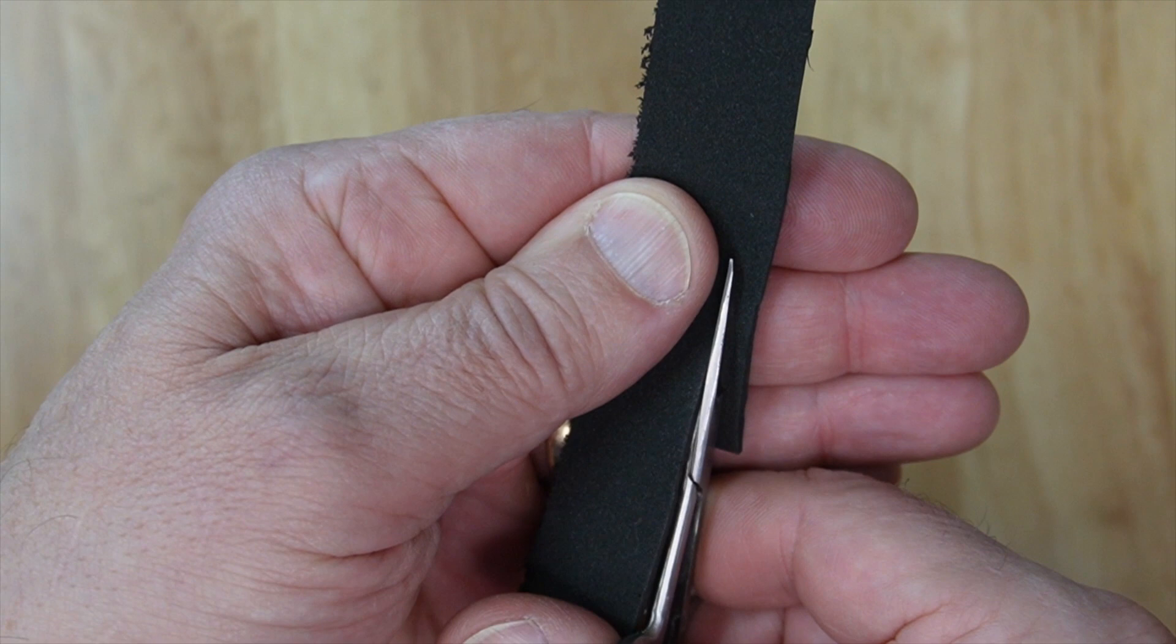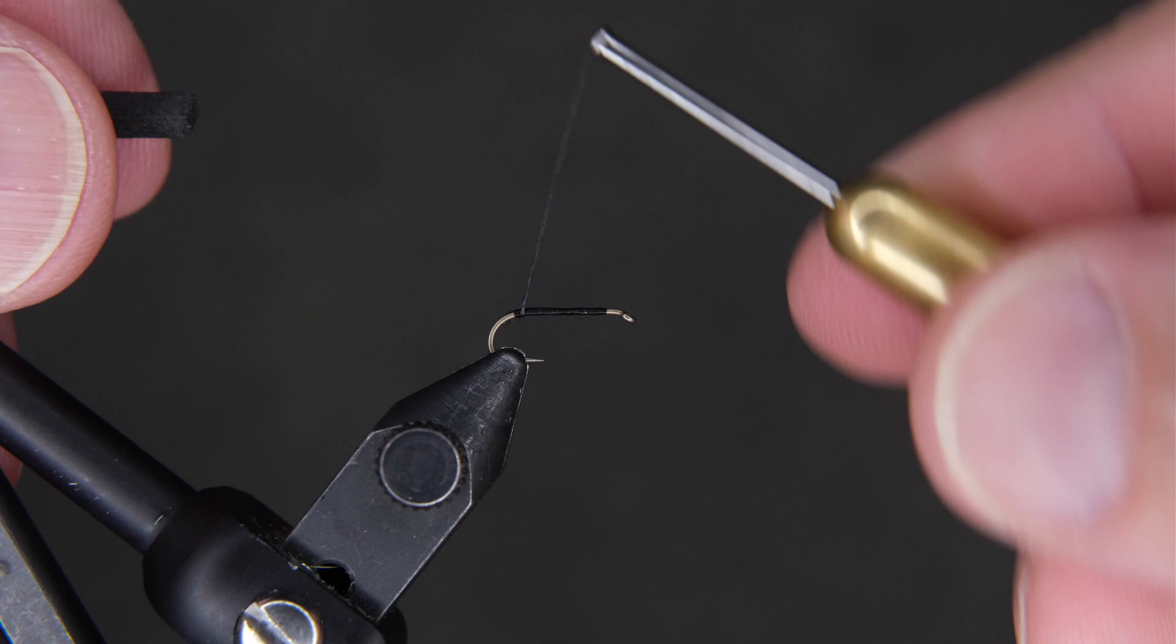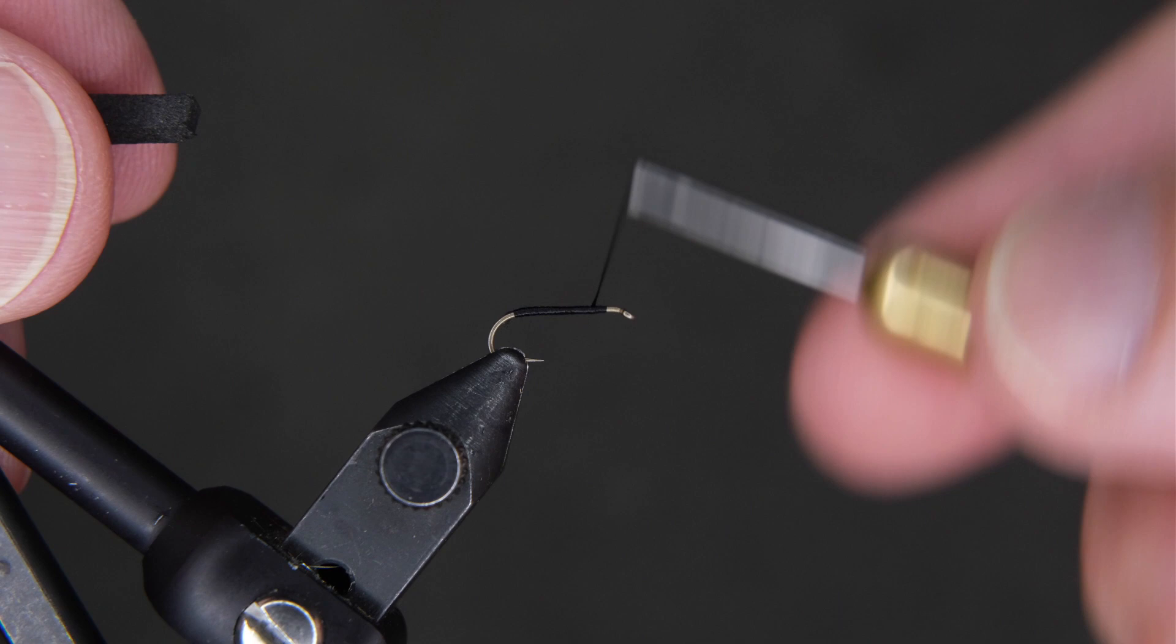Use your scissors and snip it down. Once you get that, we're going to lay it on top of the shank and secure it down. You got to move your thread to the front of the hook first, about an eye length behind the eye. So you can lay that foam down on the top, and as you tie it down, just give it a pinch.